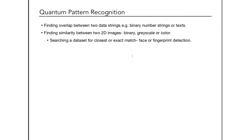Quantum pattern recognition is a very useful quantum image processing protocol, and it covers a very broad spectrum. Pattern recognition can be of various kinds — for example, recognizing a small pattern from a large binary data string, detecting general 2D images which can be binary, grayscale, or color, or very specific examples like fingerprint detection or face detection. In this work, we are particularly interested in general 2D images, binary or grayscale.